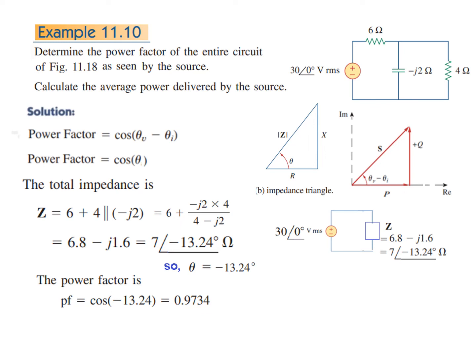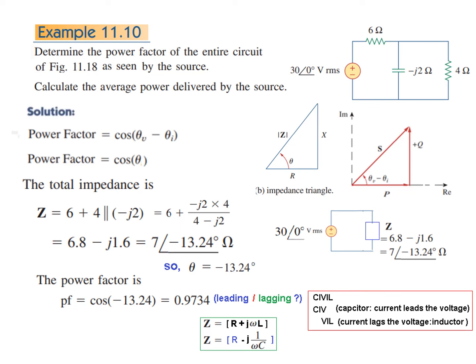We have to determine whether the power factor is leading or lagging. We know that inductive load is R plus j·omega·L, and capacitive load is R minus j·(1/omega·C). Since the impedance has a negative imaginary part, this is a capacitive load. In a capacitor, current leads voltage, so the power factor is leading.